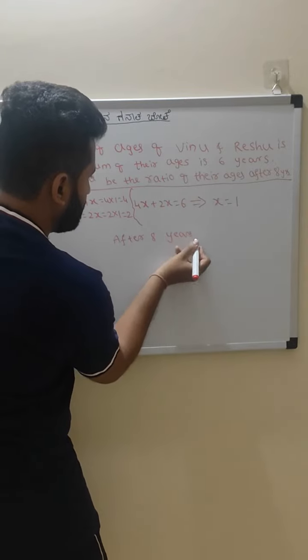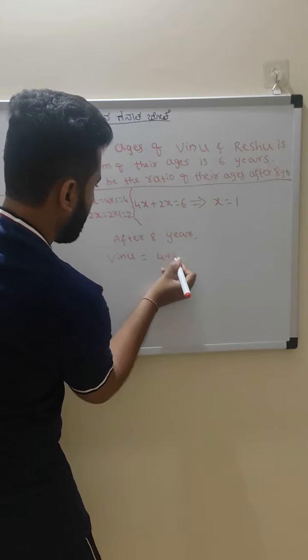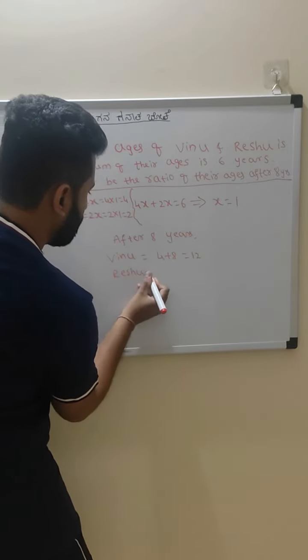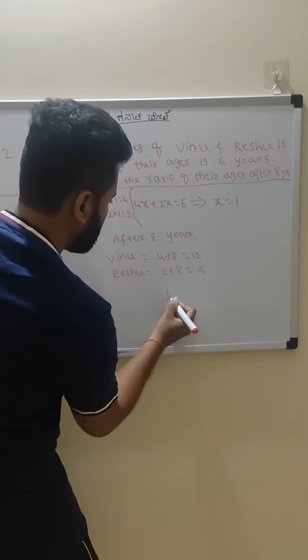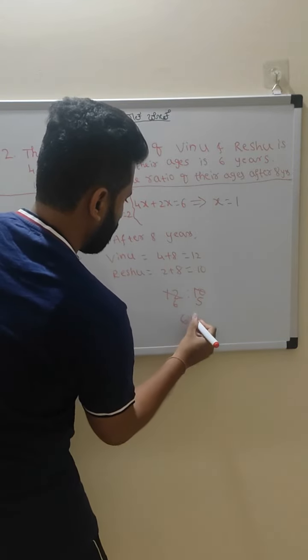After 8 years, Vinu's age will be 4 plus 8 is equal to 12 and Rasu's age will be 2 plus 8 is equal to 10. So, after 8 years their ratio will be 12 is to 10 that is 6 is to 5.